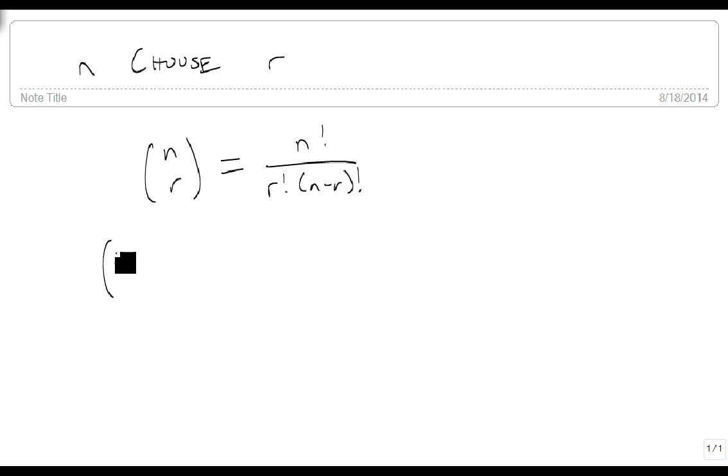To use that, suppose we have 4 choose 1. This would be 4 factorial over 1 factorial times 4 minus 1 factorial. I like to jump straight to this point: 1 factorial times 3 factorial. These two have to add up to this one. Then we get 4 times 3 factorial over 1 times 3 factorial. Divide out the 3 factorials and I get 4.